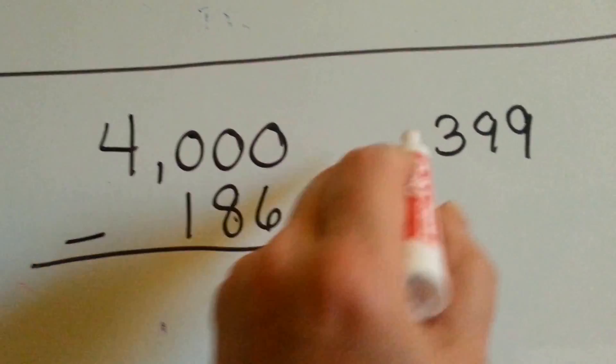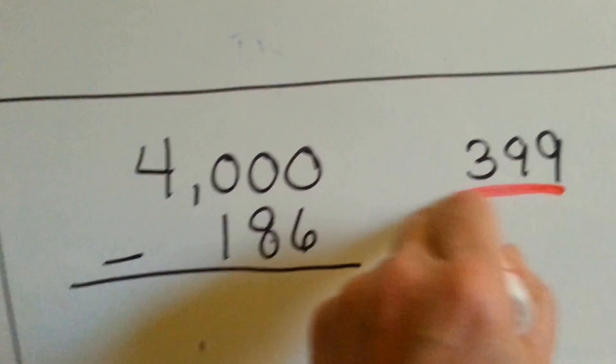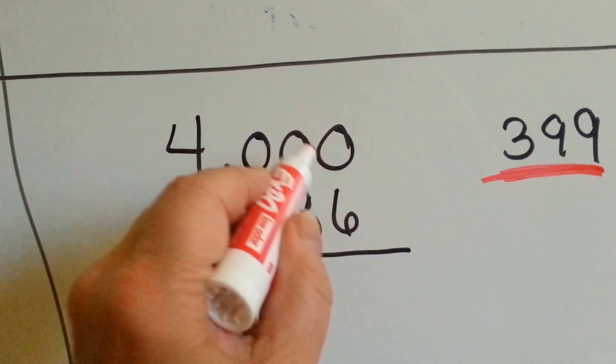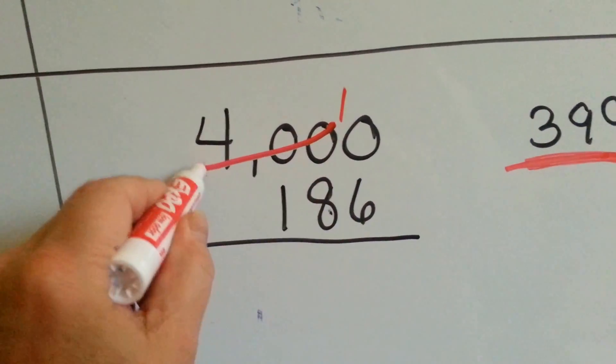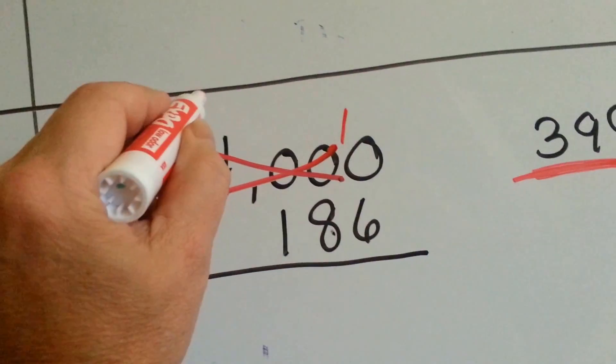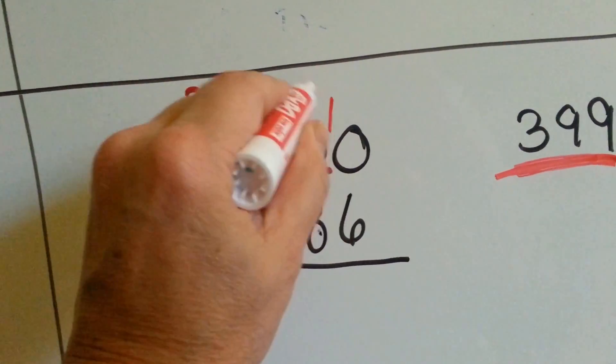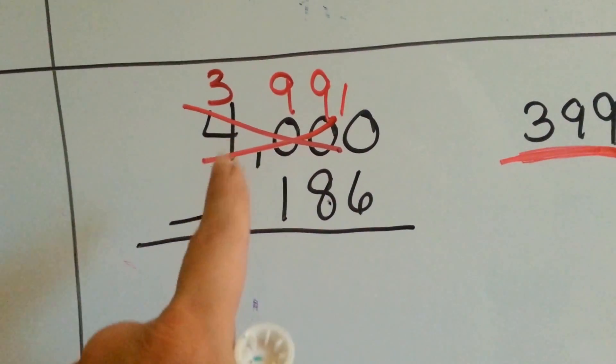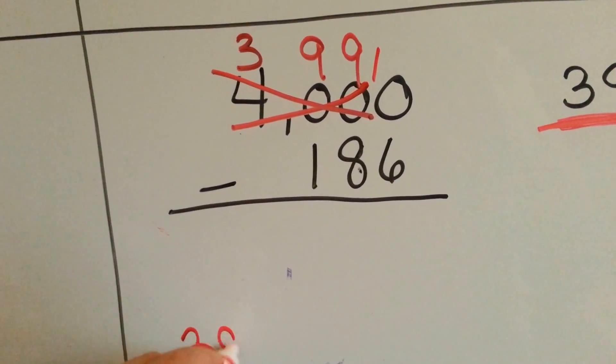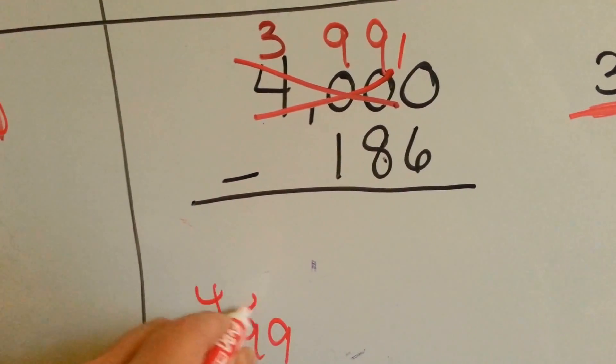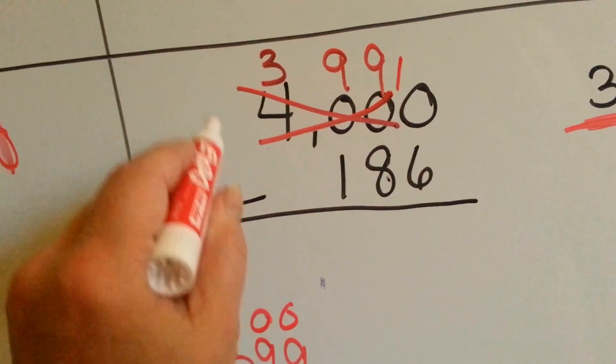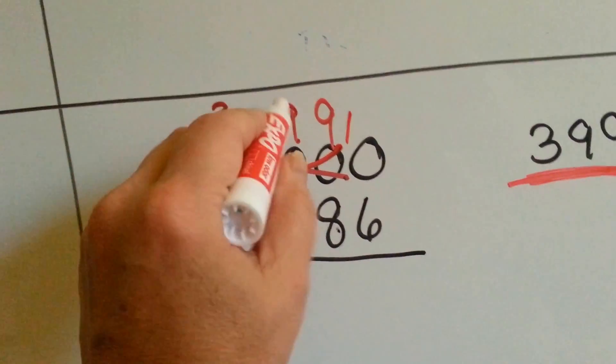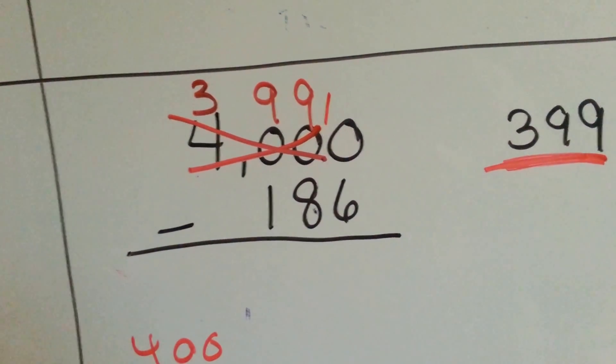you say to yourself, I need to turn this one into a 10, so that means this one is going to turn into 399. Because 399 is just 1 smaller than 400, isn't it? So we cross off the entire thing and turn it into 399, and then that last one becomes a 10.